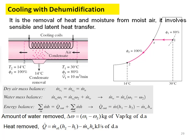Hi students, welcome to this session. In the previous session we discussed regarding the new chapter on psychrometric processes and psychrometric properties. We discussed four psychrometric processes: sensible cooling, sensible heating, humidification, and dehumidification. Today we are going to discuss the remaining psychrometric processes, which are combinations of those four.